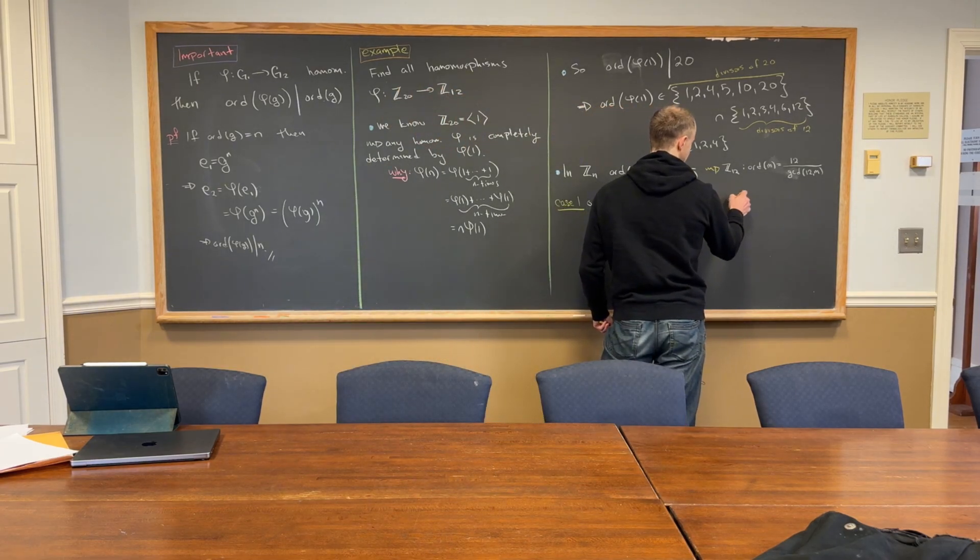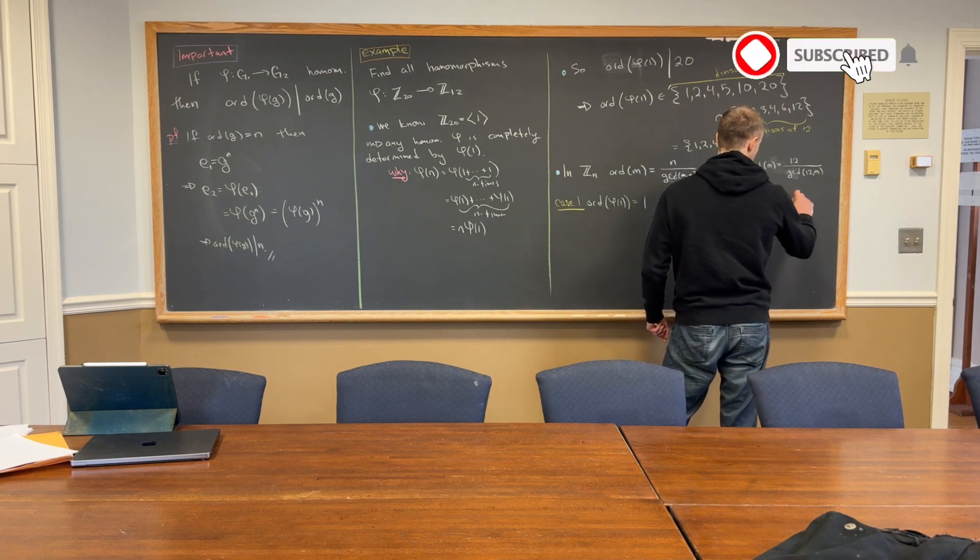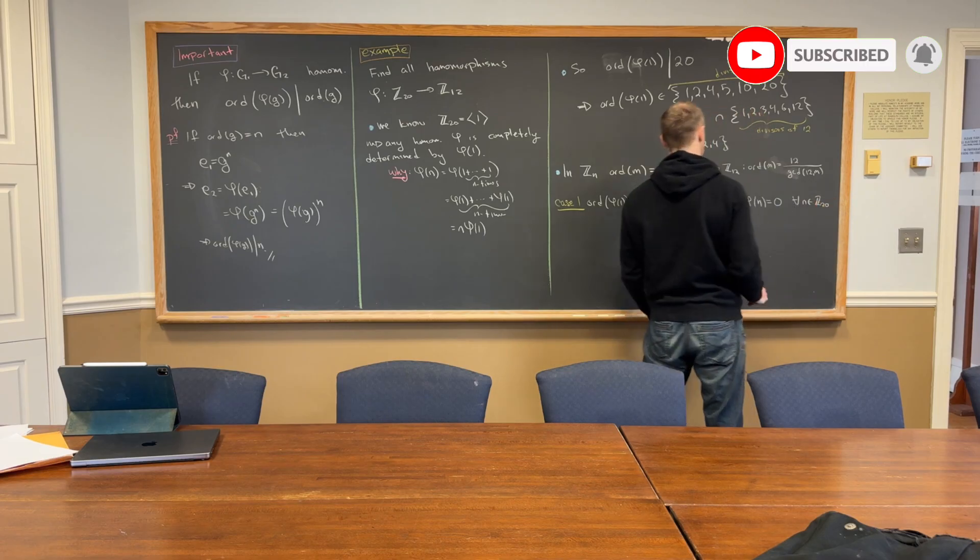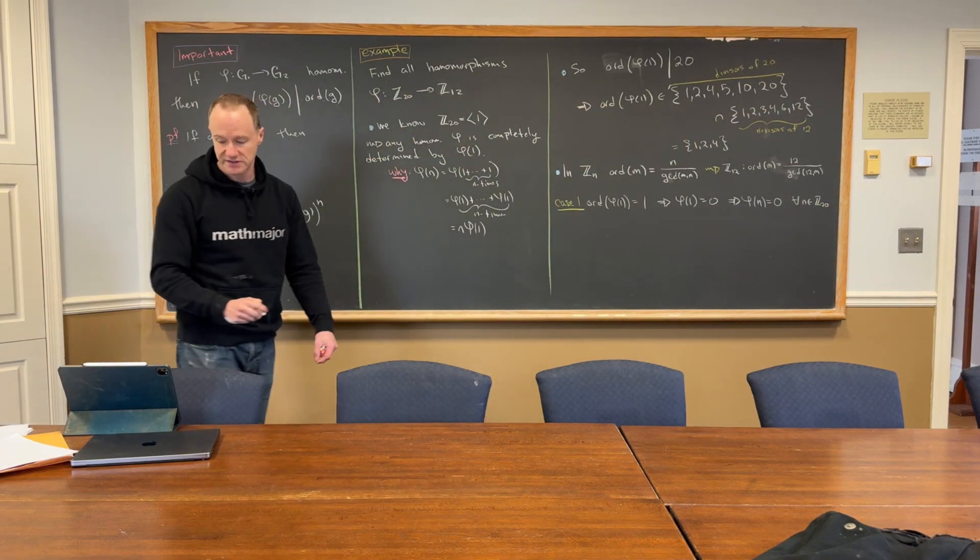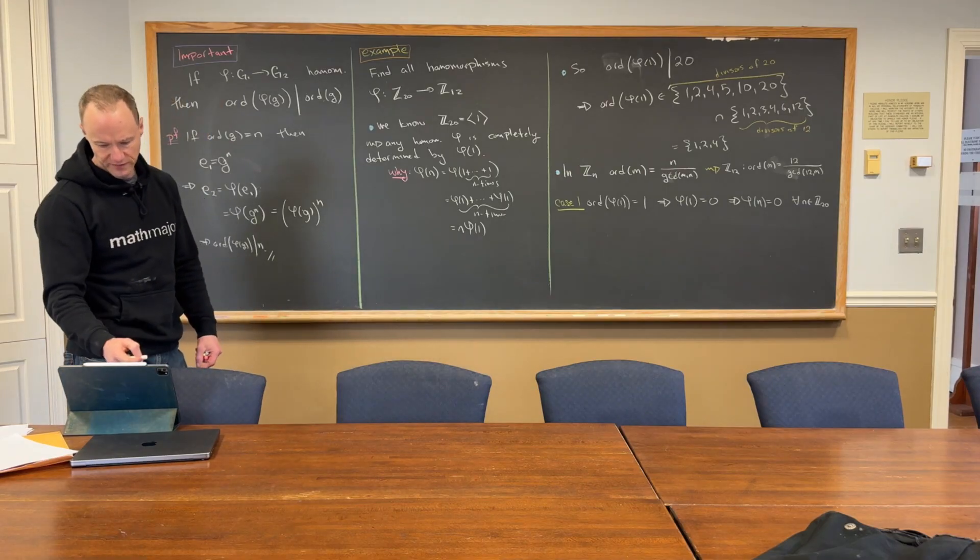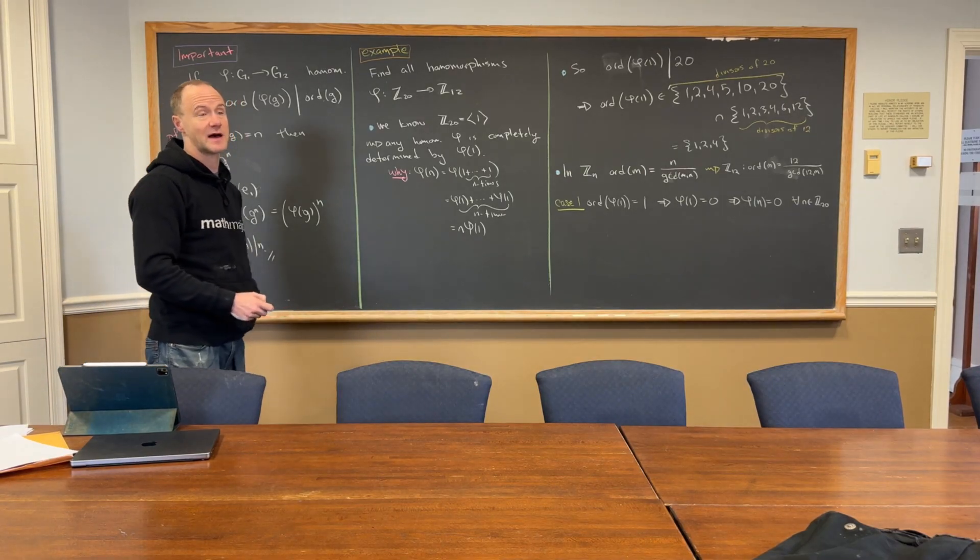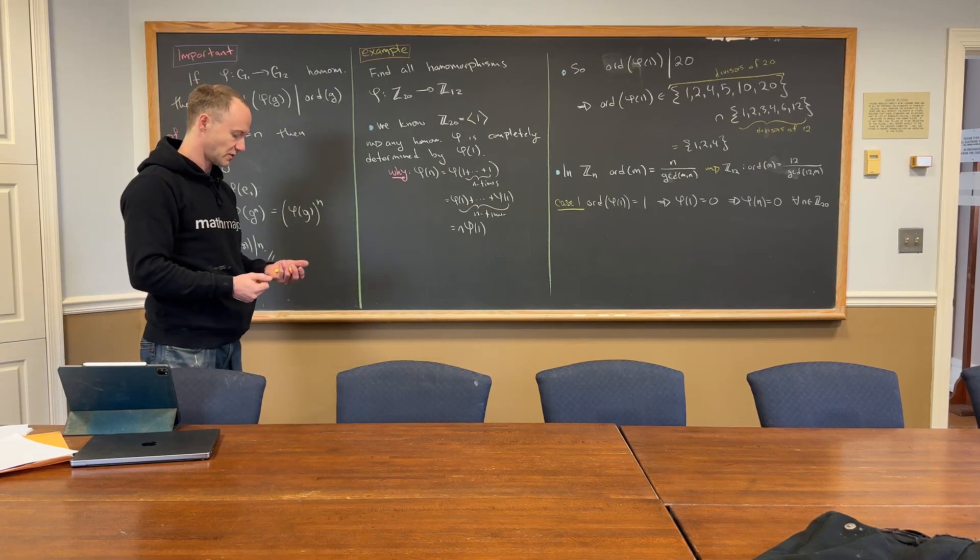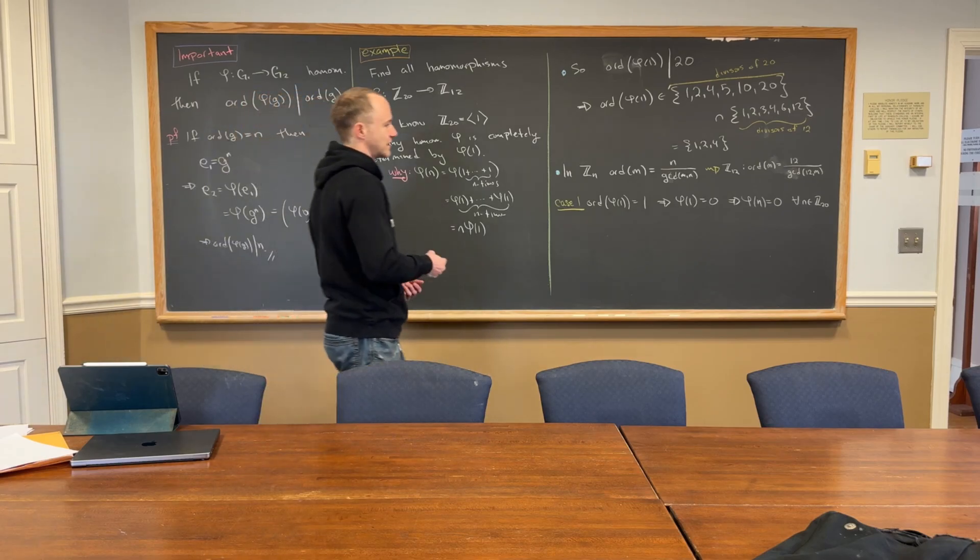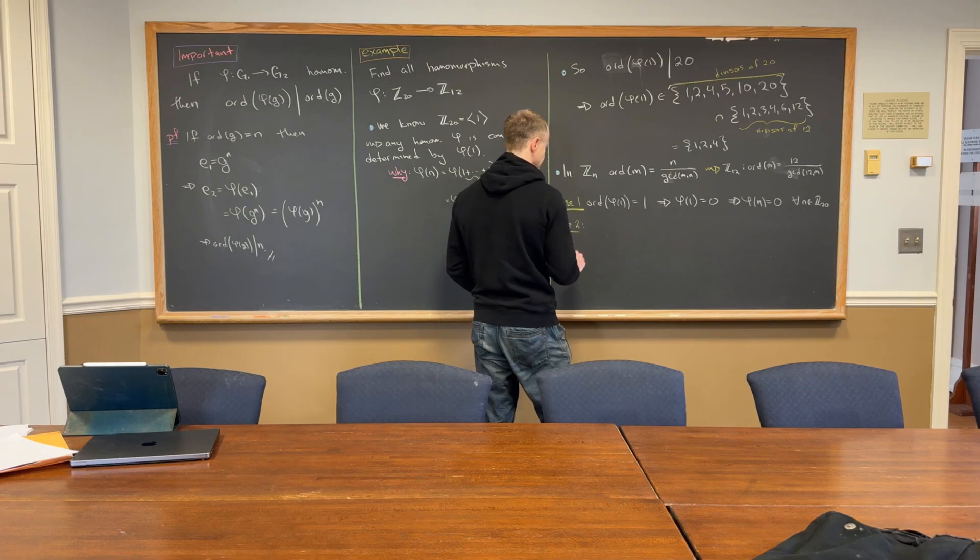So, phi of one is the identity, but that means that phi of N is equal to zero for all N in Z20, right? Yeah, yeah, yeah, yeah. Yeah, so, that's the trivial homomorphism, right? We say that something's the trivial homomorphism if it maps everything to the identity, and, obviously, if you have a trivial homomorphism, then the kernel is everything.